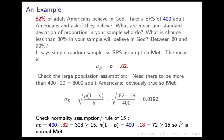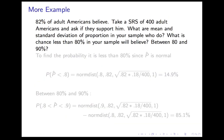Finally, we check the normality assumption — the rule of 15. N times P: 400 times 0.82 = 328, which is more than 15. N times (1 minus P): 400 times 0.18 = 72, also more than 15. Both conditions are met. Those numbers, 328 and 72, are also the average number of yes and no answers you'd expect to see in your sample.